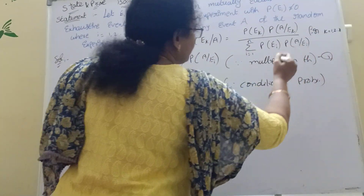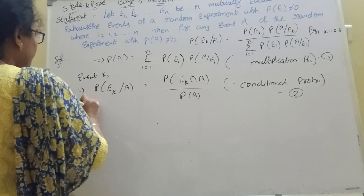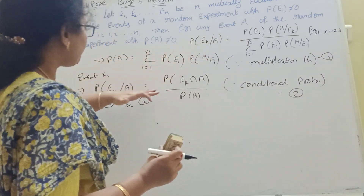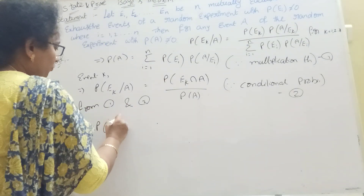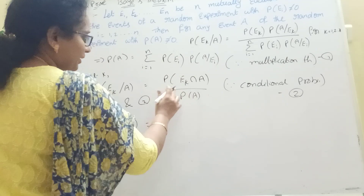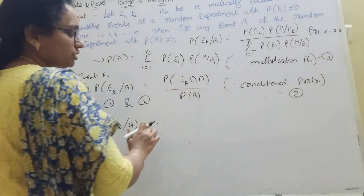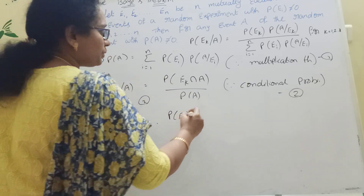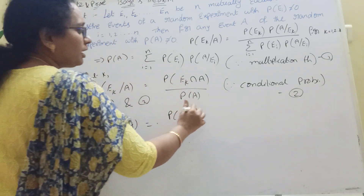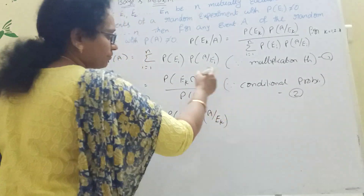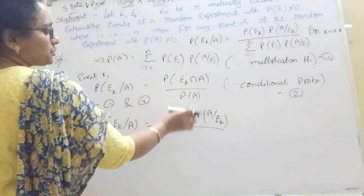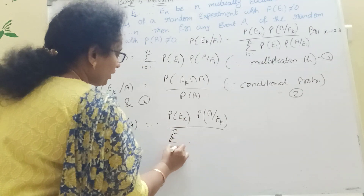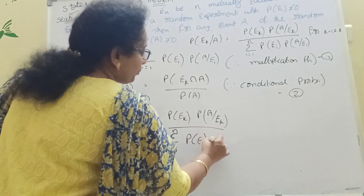From one and two, combining one and two, P of Ek given A is equal to P of Ek into A by P of A. And with one and two we will get P of Ek given A equal to P of Ek into P of A given Ek, divided by sigma i equal to 1 to n, P of Ei times P of A given Ei.